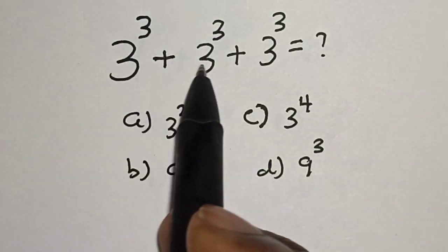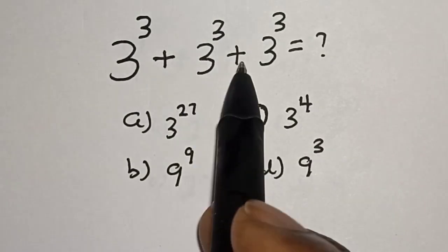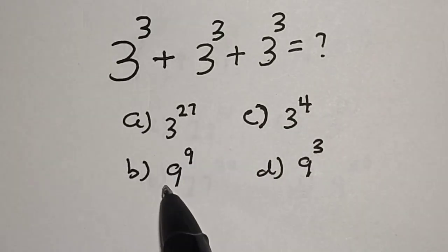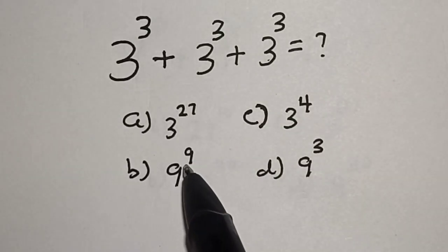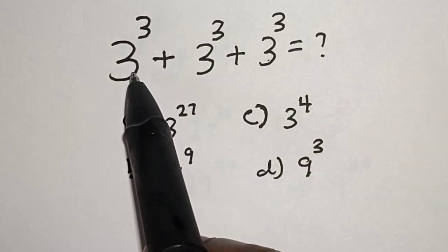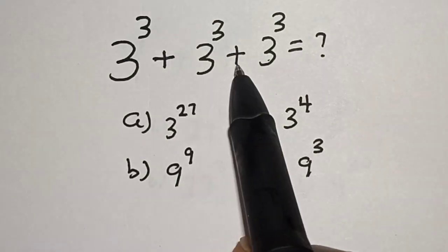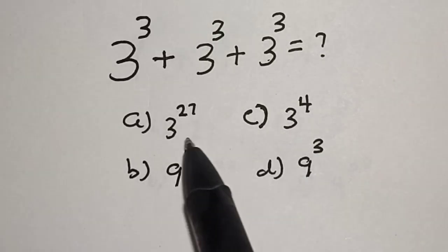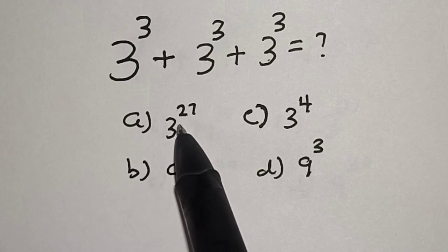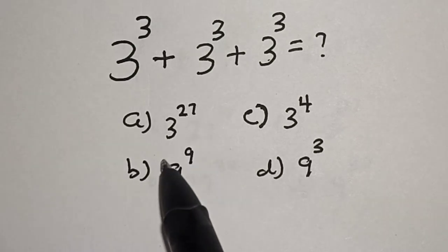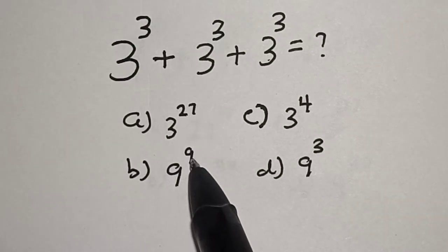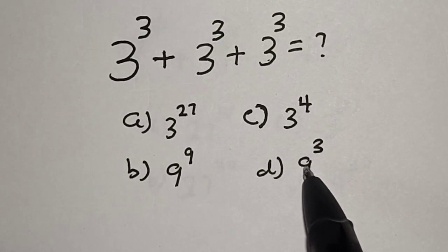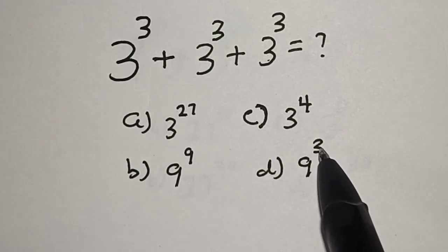Hi everyone, welcome to my class. In this class we quickly want to simplify this math problem: 3 raised to power 3 plus 3 raised to power 3 plus 3 raised to power 3 is equal to what? The options are: A) 3 raised to power 27, B) 9 raised to power 9, C) 3 raised to power 4, and D) 9 raised to power 3.